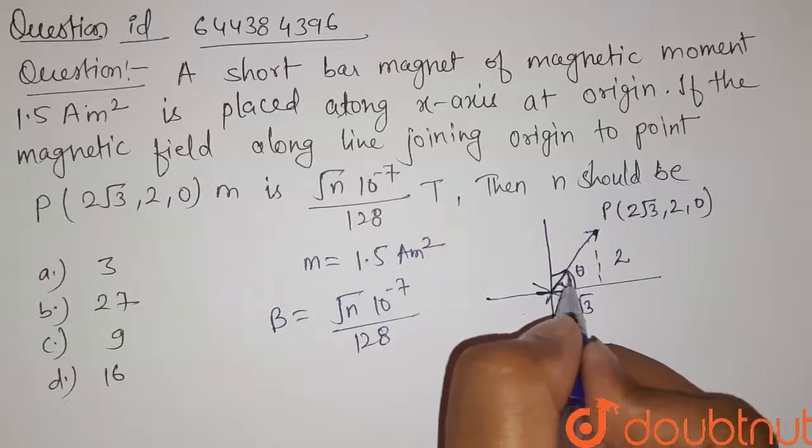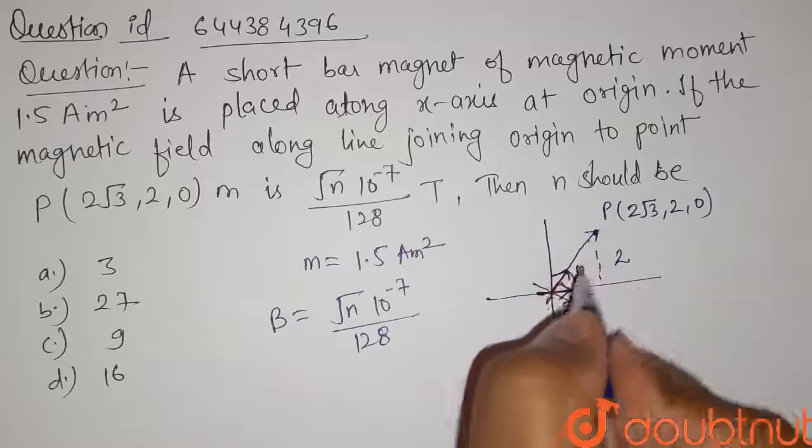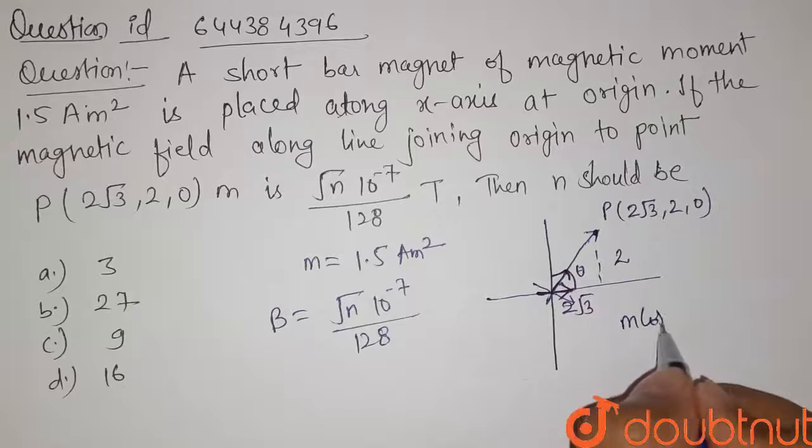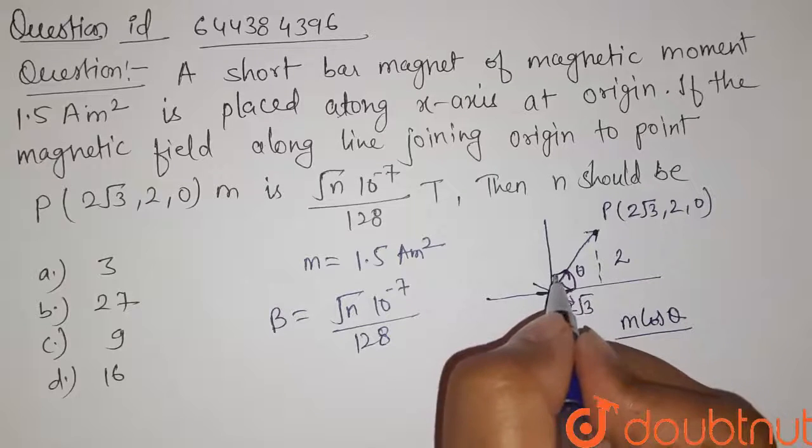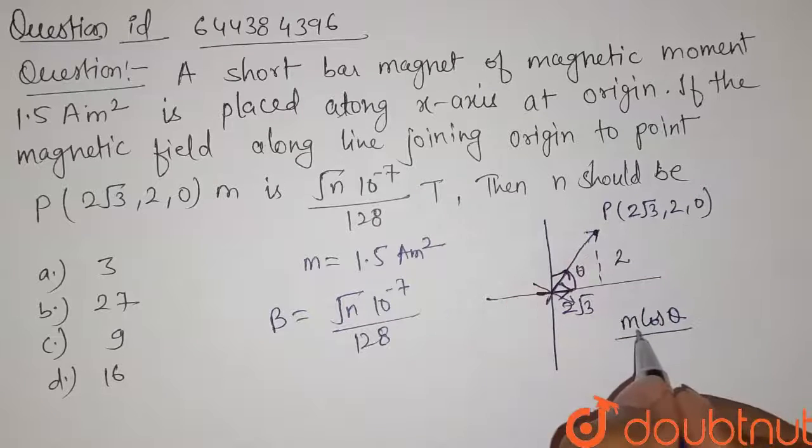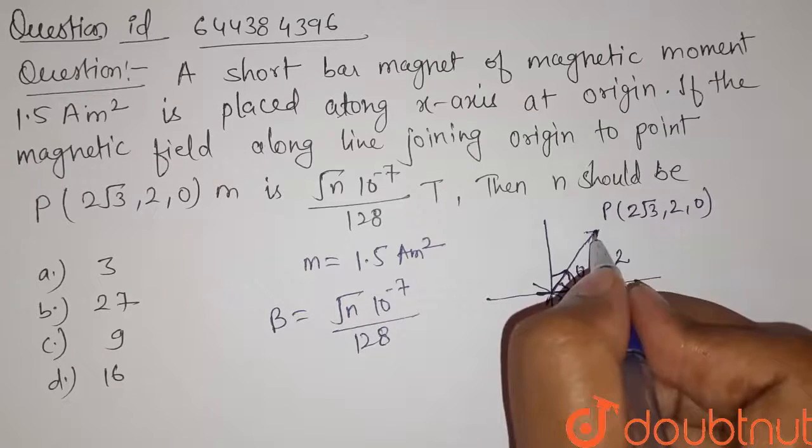This component which is along the line joining this point P and origin is equals to m cos θ. That means this is the component of magnetic moment along the line joining point P and origin, this length.